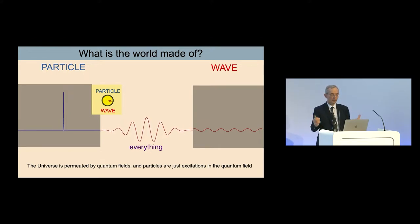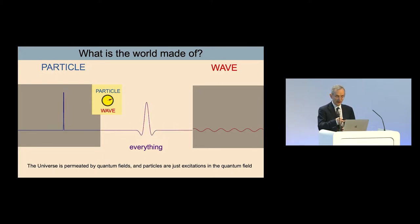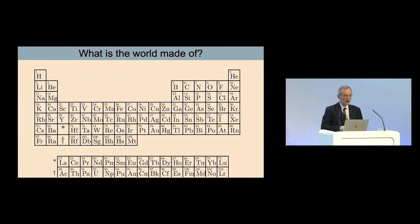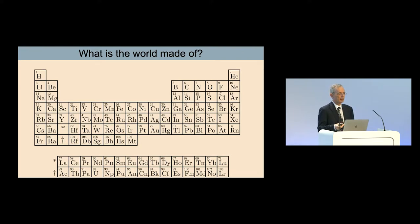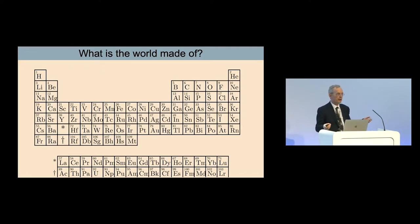The modern picture is that the universe is permeated by quantum fields — light, electrons, protons, everything. These fields exist throughout the universe, and particles are just excitations in this field. Now, of course, when you put all these fields together they do funny things. Quantum mechanics in one sense is quite straightforward — you can write down the Schrödinger equation. But when you put lots of things together you start getting chemistry, and the complexity of the periodic table, which makes everything.